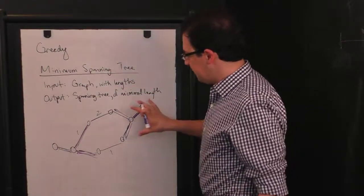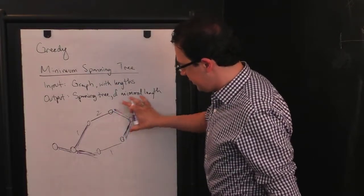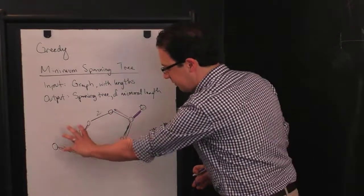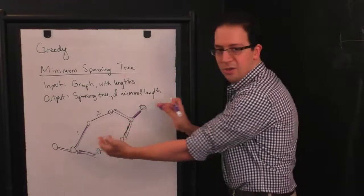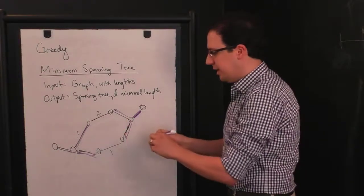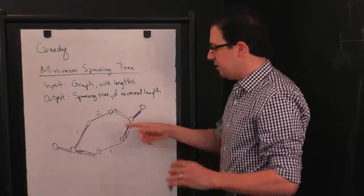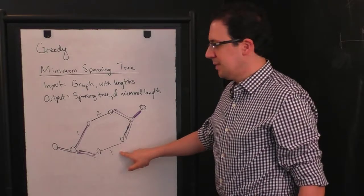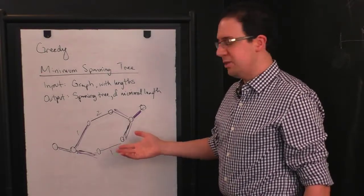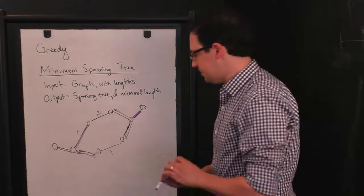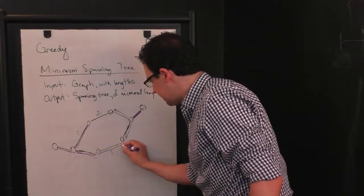Now comes the interesting part. I have two connected pieces. These four vertices are connected and these four vertices are connected, but these pieces are not connected to one another. And now I actually have a choice of which edge do I use to connect them? And the obvious answer is choose the shorter one. So I choose this.